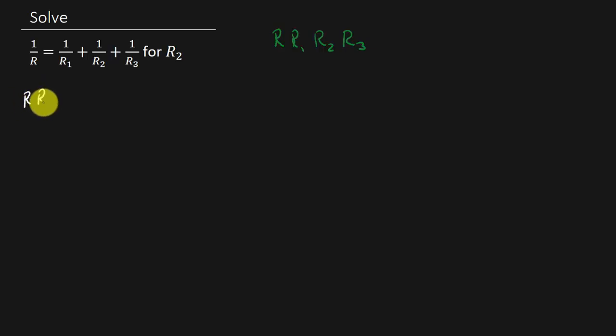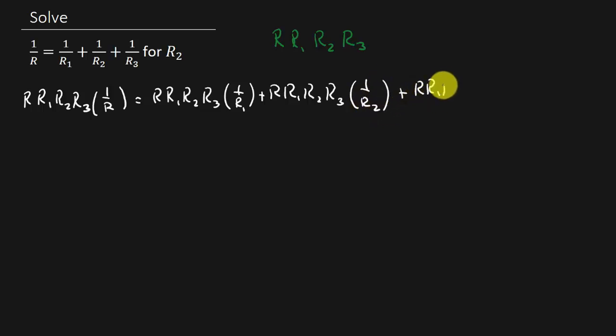So we've got R, R1, R2, R3 times 1 over R equals R, R1, R2, R3 times 1 over R1 plus R, R1, R2, R3 times 1 over R2 and then I've got plus R times R1 times R2 times R3 times 1 over R3.